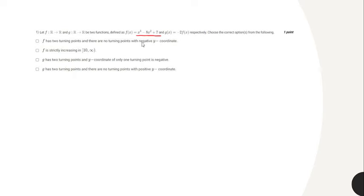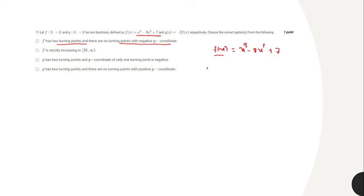Based on these statements we have to answer some questions: that f has two turning points and there are no turning points with negative y coordinate. To find the turning points of f of x, we differentiate it to get 3x squared minus 16x, then equate to 0. This gives x times (3x minus 16) equals 0, so at x equals 0 and x equals 16 over 3 there are two turning points.